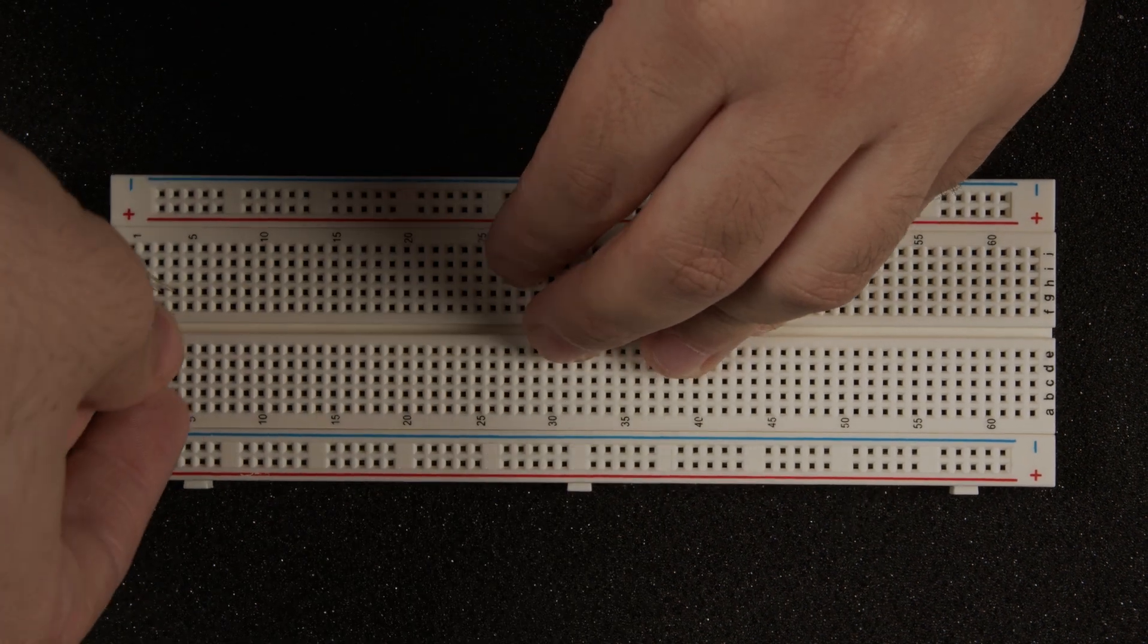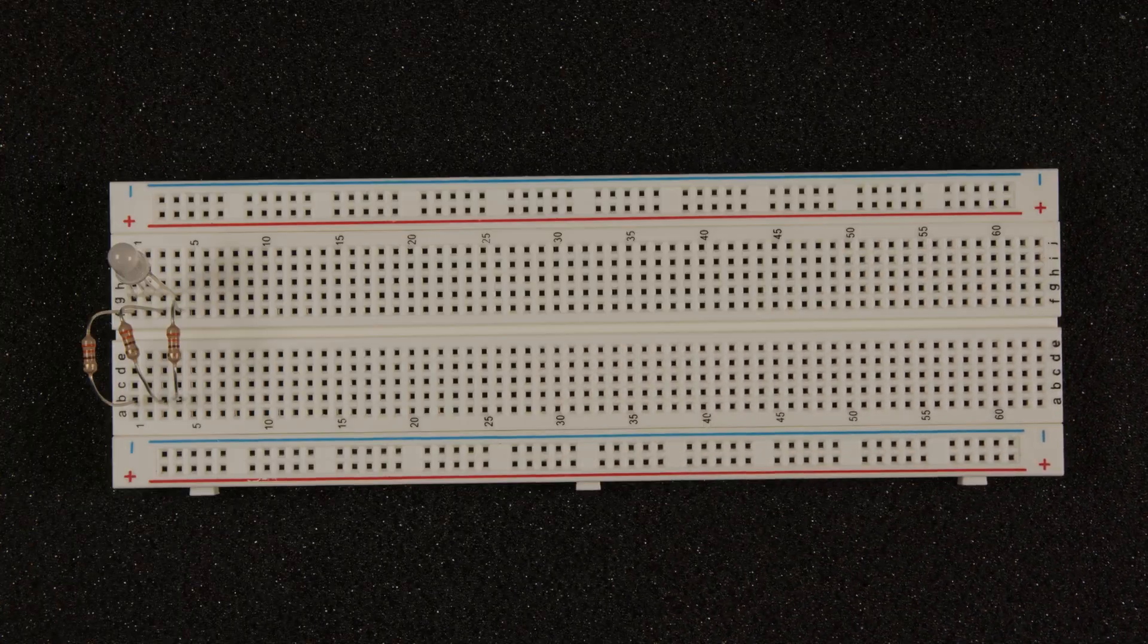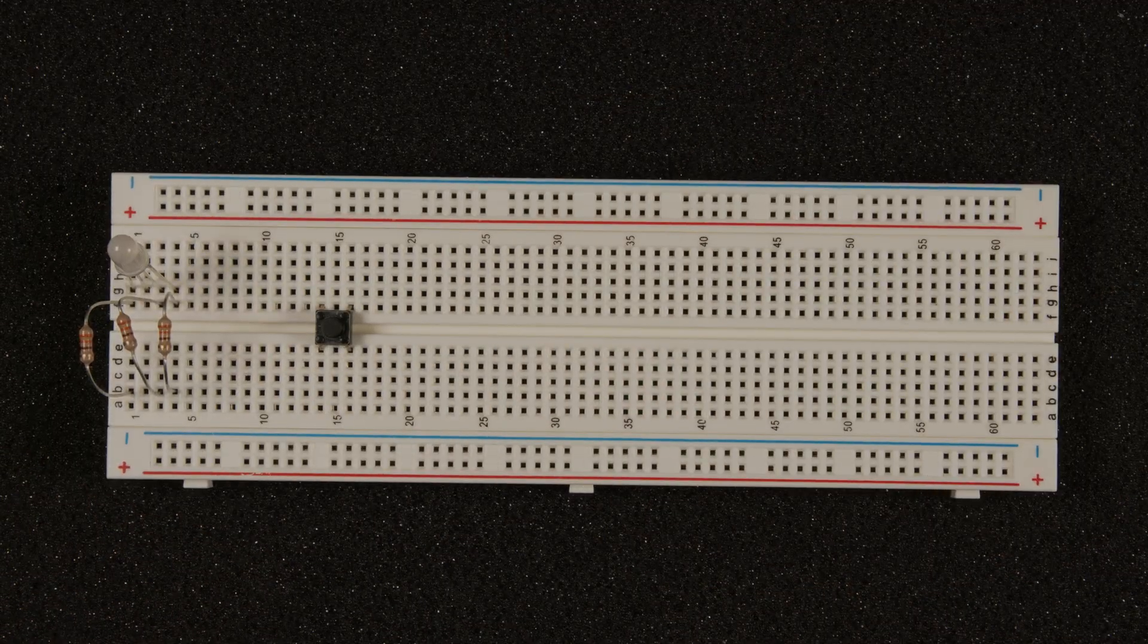Make sure that the resistor and LED are connected to different rows. For the button, it will fit in the middle of the breadboard.